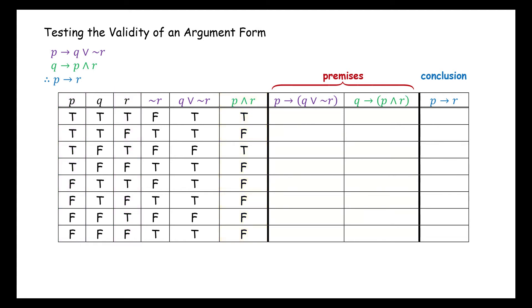Now we can determine the truth value of the premises. For the if P, then (Q or not R) column, we have: true, true, false, true, true, true, true, true.